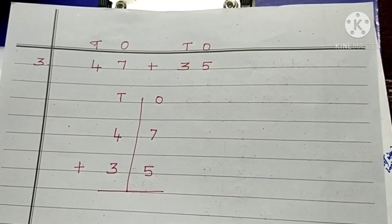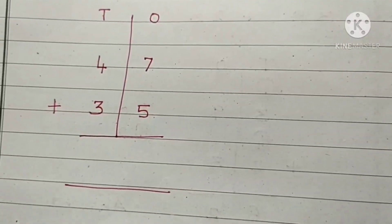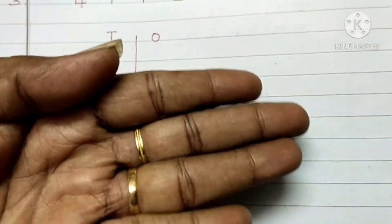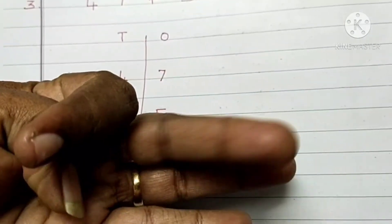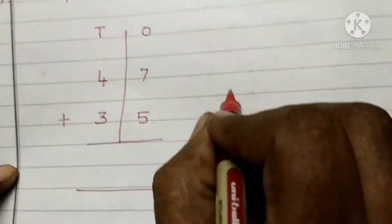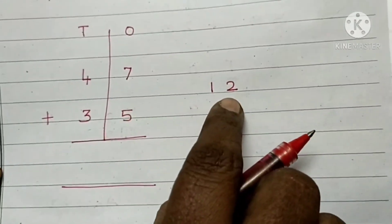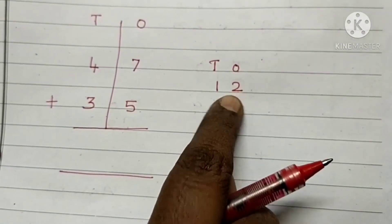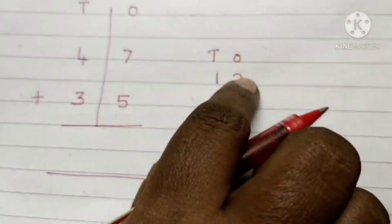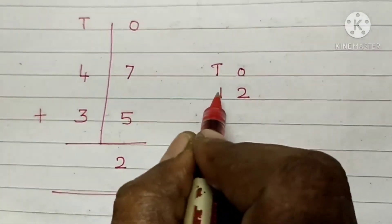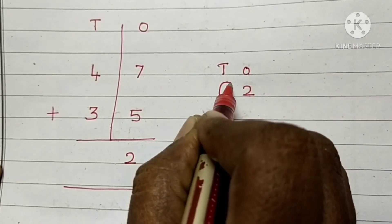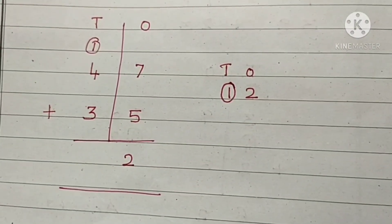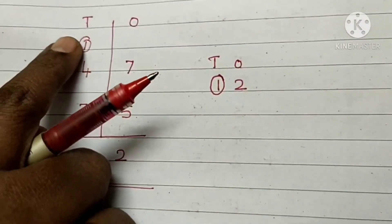First add the 1's digits. 7 plus 5. 7 in the mind, 5 in the fingers. After 7: 8, 9, 10, 11, 12. Write 12 here. Put the place value for 12. Place the digit 2 under the 1's. Place the digit 1 over the 10's column.